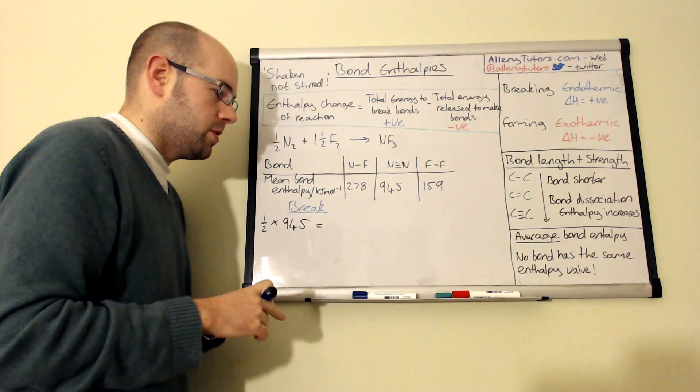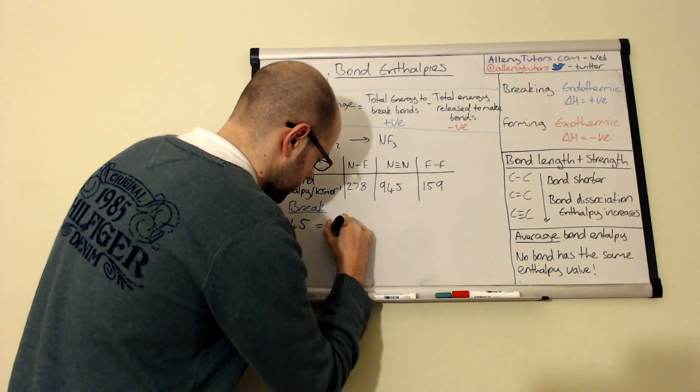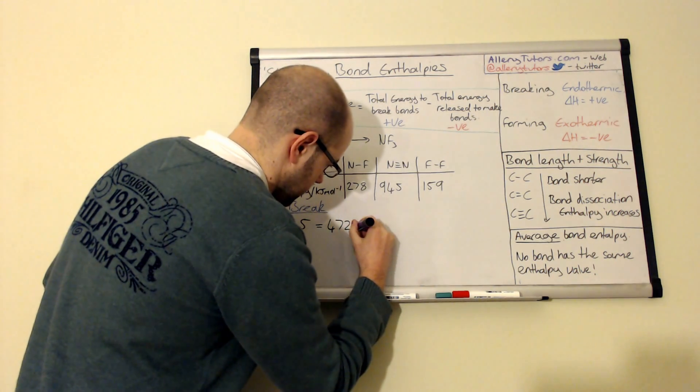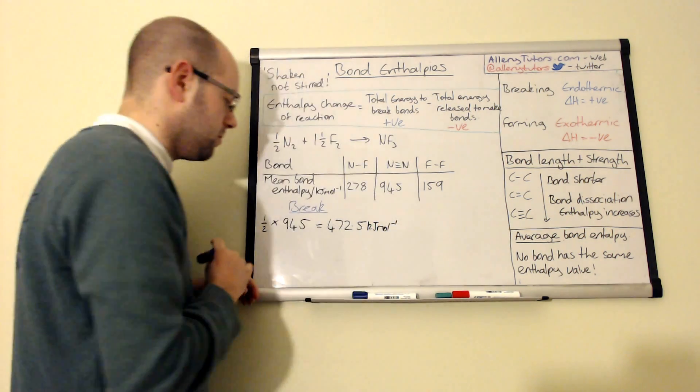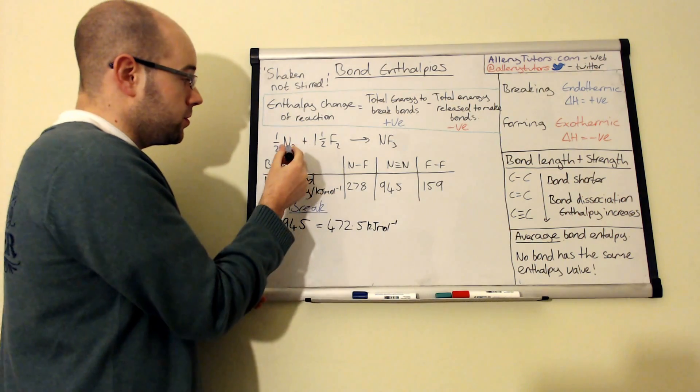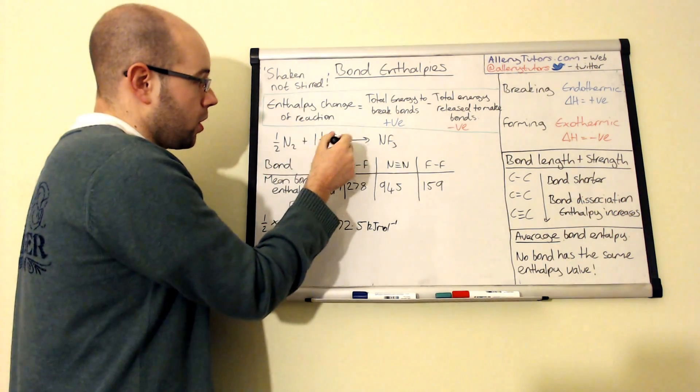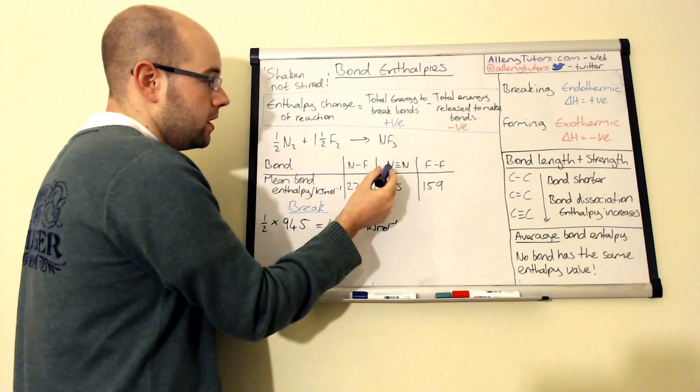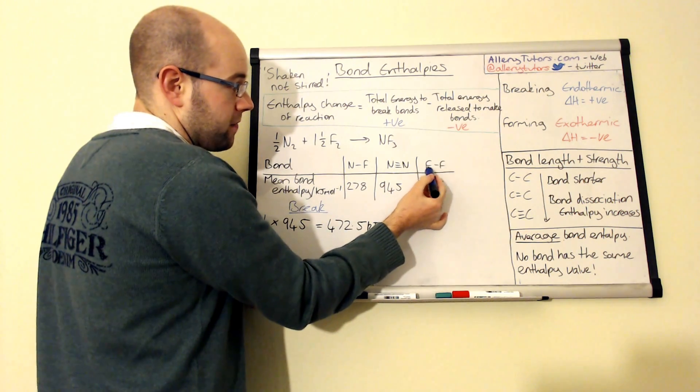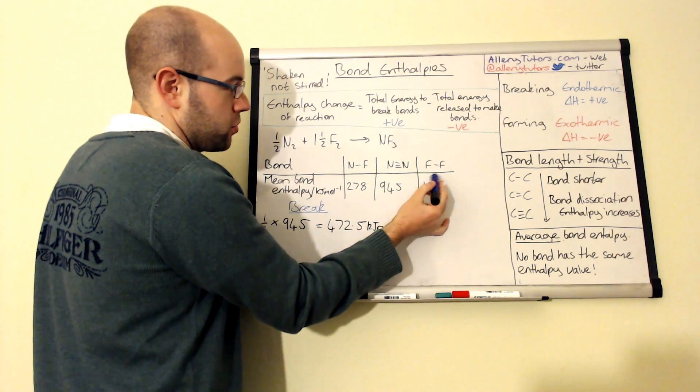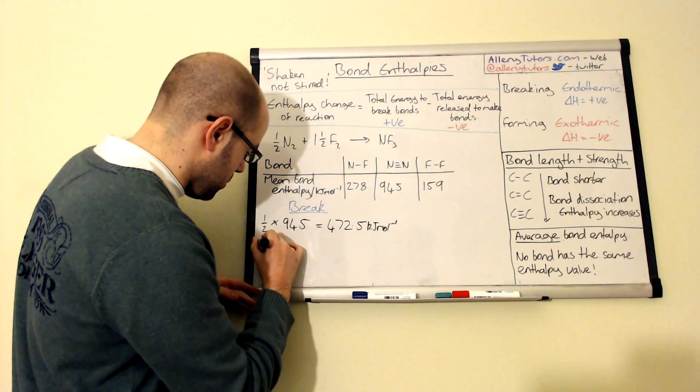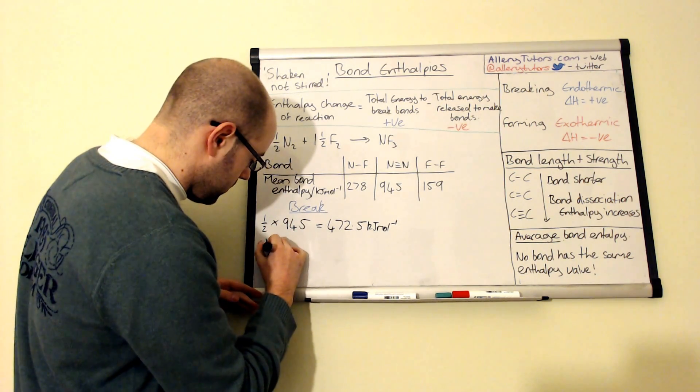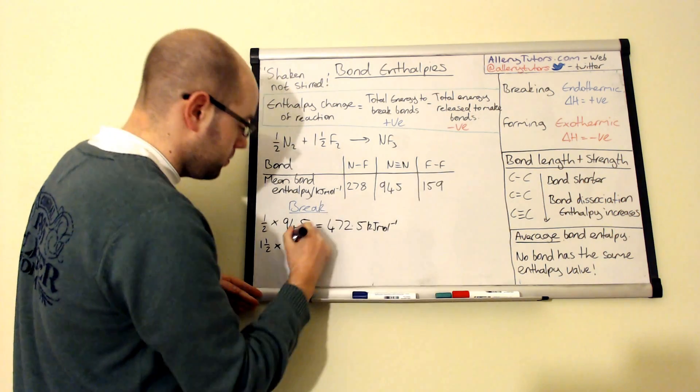So it's very important to take into account that half there. And if we put that on our calculator, we should get 472.5, and that's kilojoules per mole. So I'll quickly put that one there.